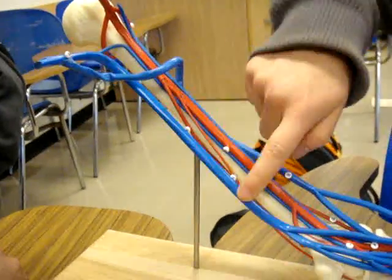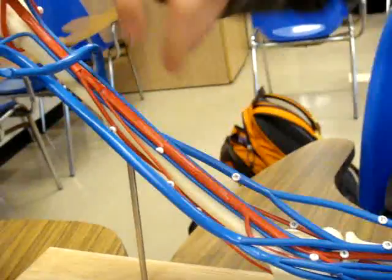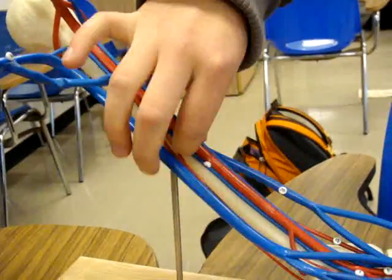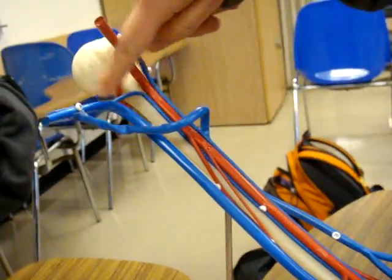This is your basilic vein and this is your cephalic vein. These are your paired brachial veins, both sides. This is going to go to your axillary vein.